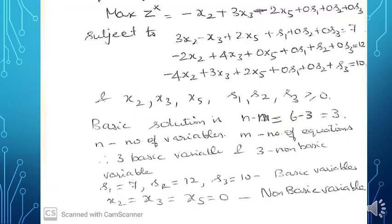Therefore, the standard form of LPP becomes: maximize z* = -x2 + 3x3 - 2x5 + 0·s1 + 0·s2 + 0·s3, subject to: 3x2 - x3 + 2x5 + s1 = 7; -2x2 + 4x3 + s2 = 12; and -4x2 + 3x3 + 2x5 + s3 = 10. The changes made are adding s1, s2, and s3 for all three inequalities.